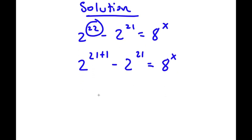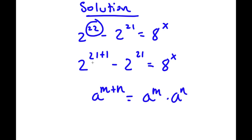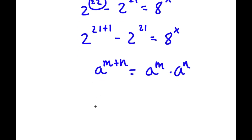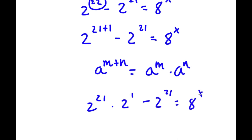If I have something in the form a to the power of m plus n, this is equal to a to the power of m times a to the power of n. So 2 to the power of 21 plus 1, I can rewrite it as 2 to the power of 21 times 2 to the power of 1, and I still have minus 2 to the power of 21 is equal to 8 to the power of x.